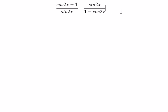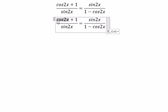Now I will show you the technique. For cosine 2x, we can change it to 2 cosine squared x minus 1.